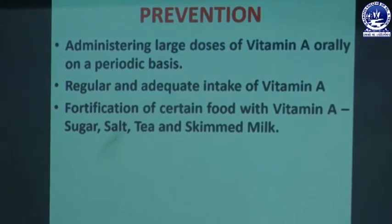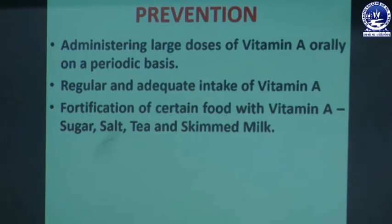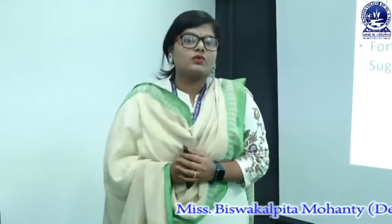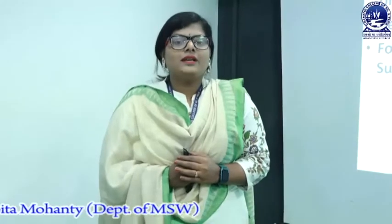Prevention of xerophthalmia includes administering large doses of vitamin A orally on a periodic basis, regular and adequate intake of vitamin A, and fortification of certain foods with vitamin A — such as sugar, salt, tea, and skimmed milk. The body cannot create vitamin A on its own, so we must take it periodically and on a regular basis to eradicate problems related to our vision.